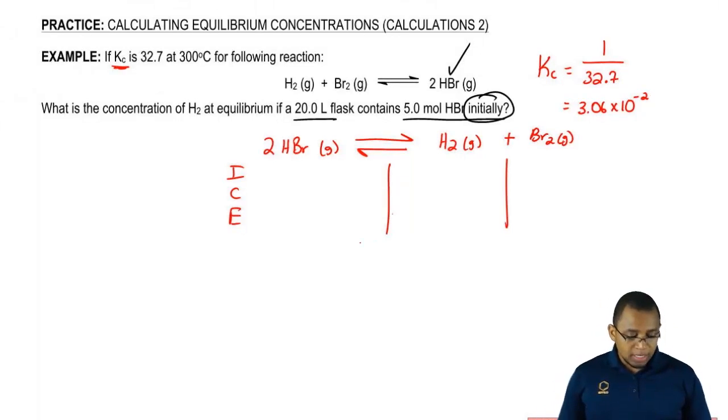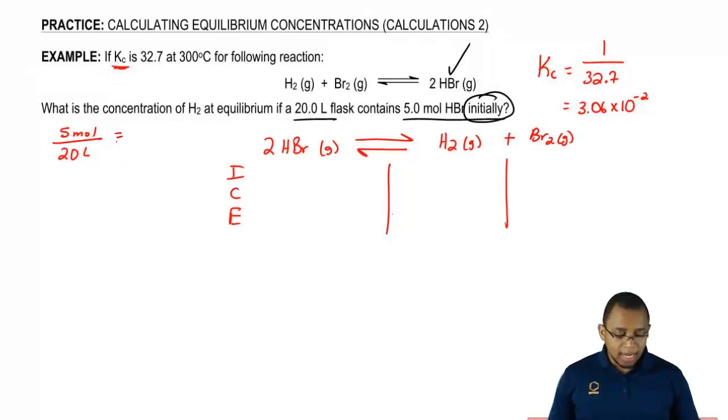Now what we're going to do here is we're going to say initially, how much reactant do we have? We have 5 moles and we're going to divide it by 20 liters. And remember, we're doing this because the units we can use in an ice chart are molarity or atmospheres. Since we have moles and liters in this question, that's going to help us find molarity. So that's going to be 0.25 molar.